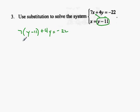Using distributive property now, we go 7y minus 77 plus 4y equals negative 22.